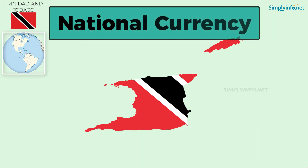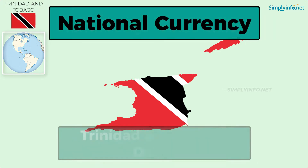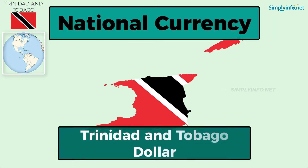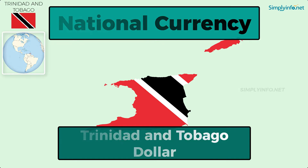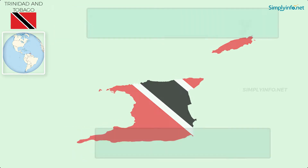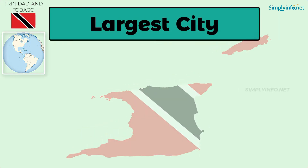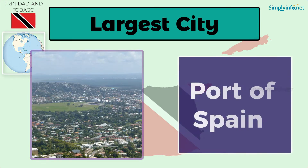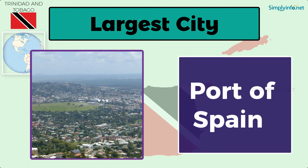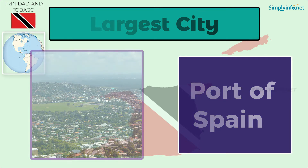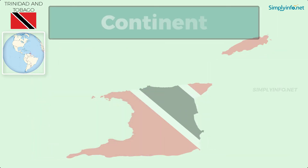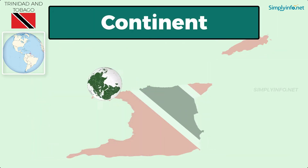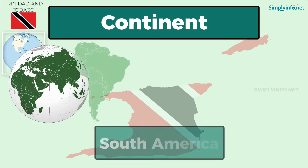National currency: Trinidad and Tobago Dollar. Largest city: Port of Spain. Continent: South America.